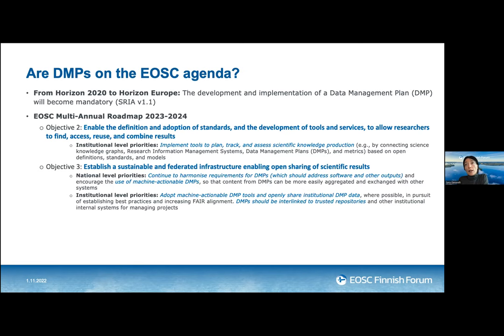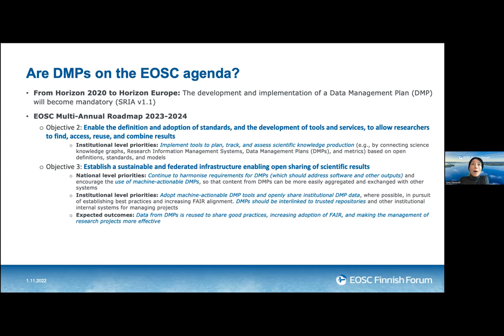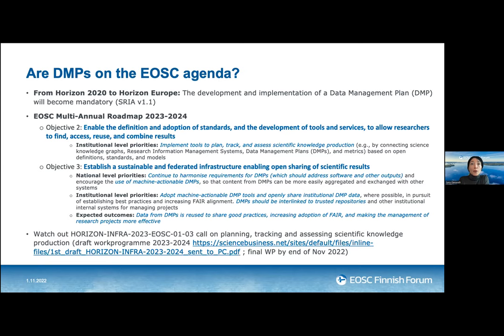DMPs should also be interlinked to trusted repositories. The expected outcomes from all these actions are that data from DMPs is reused to share good practices, increasing adoption of FAIR and making the management of research projects more effective. These priorities will be released in the multi-annual roadmap, which will be endorsed by the EOSC Association General Assembly in November, and will be reflected in the next work program.